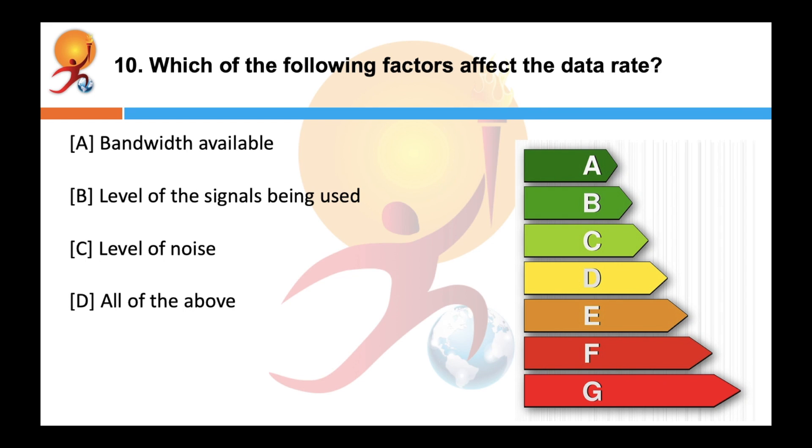Which of the following factors affect the data rate? Correct answer is all of the above. Data rate depends on three factors: bandwidth available, the level of signal in use, and the quality of the channel, that is the level of noise. So all of the above.